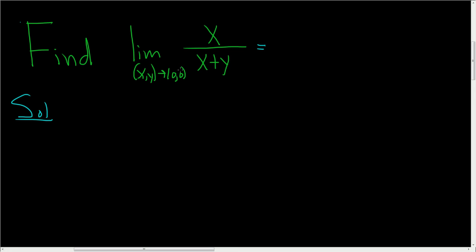In this case, both x and y are approaching 0. So we get 0 over 0 plus 0, which is 0 over 0, which is undefined. So that strategy did not work.